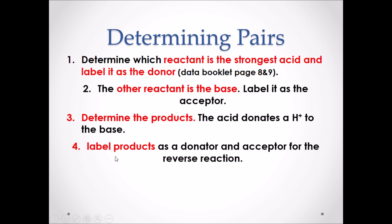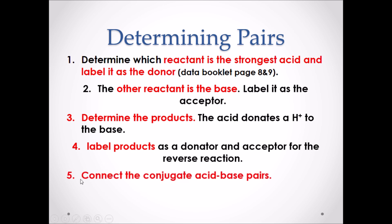Step four: label the products as a donor and acceptor for the reverse reaction — meaning, label them as the new acid and the new base. And finally, step five: connect the conjugate acid and base pairs. Remember, conjugate pairs differ only by a hydrogen.